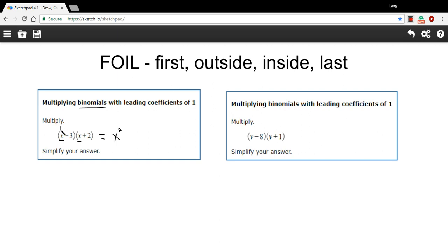Outside terms are this one and this one. So they're on the outside of this whole expression here. So x times a positive 2 would be plus 2x. The inside terms are these guys, the negative 3 and the x. Really important not to drop that sign. Signs come along with the numbers. So negative 3 times x is minus 3x.